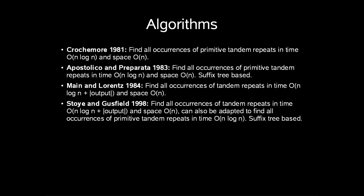In 1984, Main and Lorentz showed how to find all occurrences of tandem repeats in time O(n log n) plus the length of the output and using linear space. Stoye and Gusfield showed in 1998 how to find occurrences of tandem repeats in the same time. This algorithm can also be adapted to find all occurrences of primitive tandem repeats in O(n log n). All this is suffix tree based.